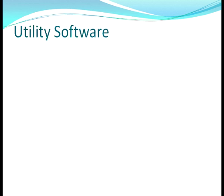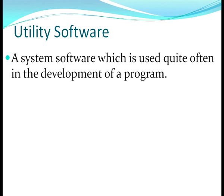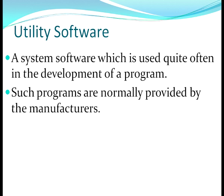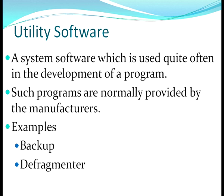The third type of system software is utility software, used quite often in the development of a program. These programs are normally provided by manufacturers but add-on utilities are also available. They are used for housekeeping functions of a computer. Examples include backup utility for taking backup of data, defragmenter utility for efficient use of storage by compiling unused portions into a single block, and antivirus utility to remove viruses from your computer.